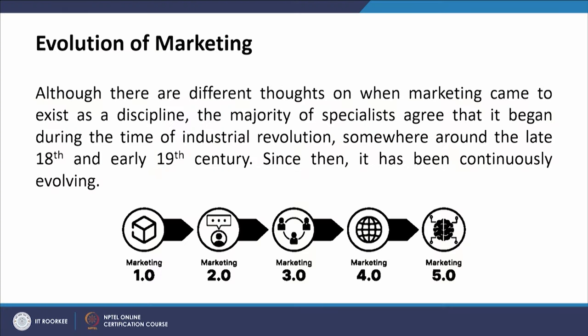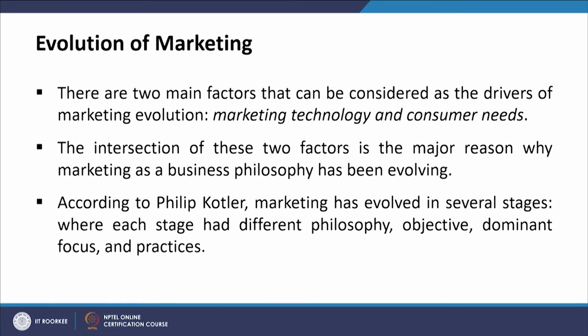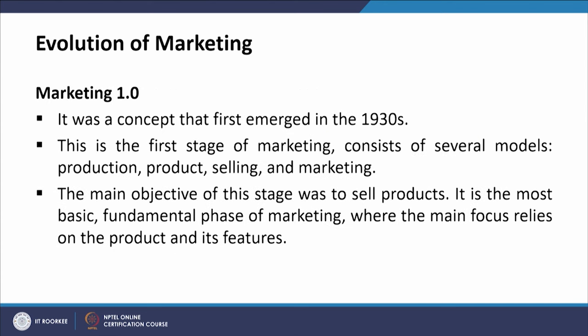Now we will look at the evolution of marketing. Although there are different thoughts on when marketing came to exist as a discipline, the majority of specialists agree that it began during the industrial revolution — somewhere around the late 18th and early 19th century. Since then, it has been continuously evolving from Marketing 1 to 2 to 3 to 4 to 5. There are two main factors that can be considered as the drivers of marketing evolution: marketing technology and consumer needs. According to Philip Kotler, marketing has evolved in several stages where each stage has a different development philosophy, objective, dominant focus, and practices.